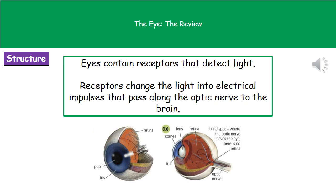One of the things they like to ask you is what detects the light, and the answer is a receptor. What those receptors do is change the light into an electrical impulse that then passes from the eyeball along the optic nerve to our brain, which interprets those impulses and tells us what we see.